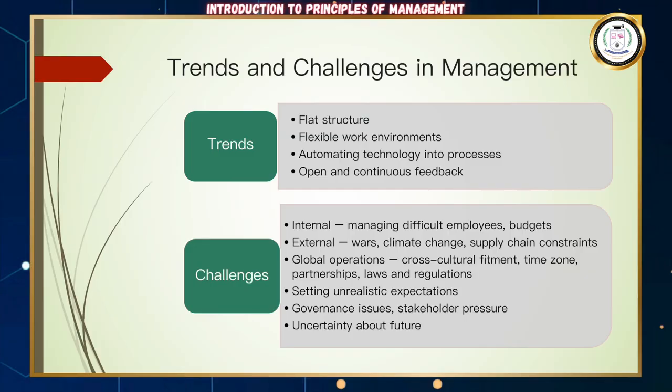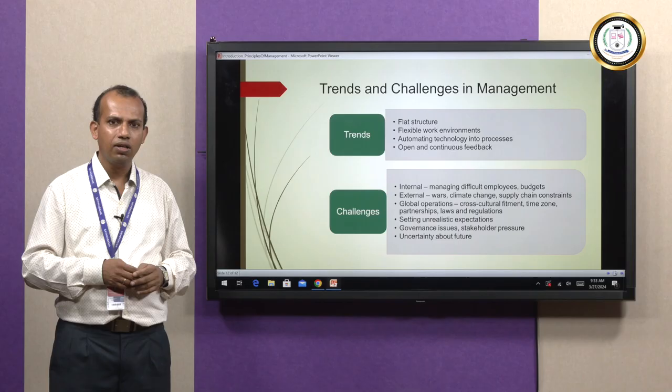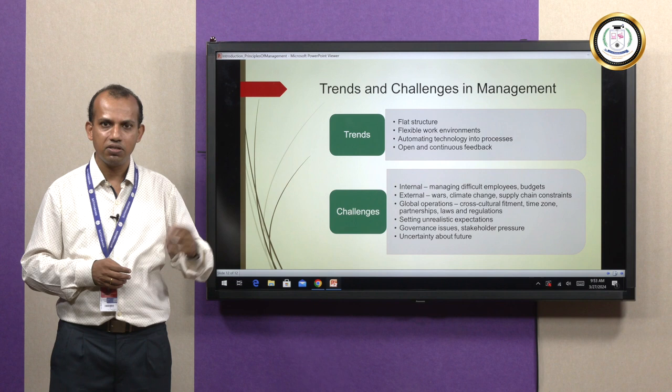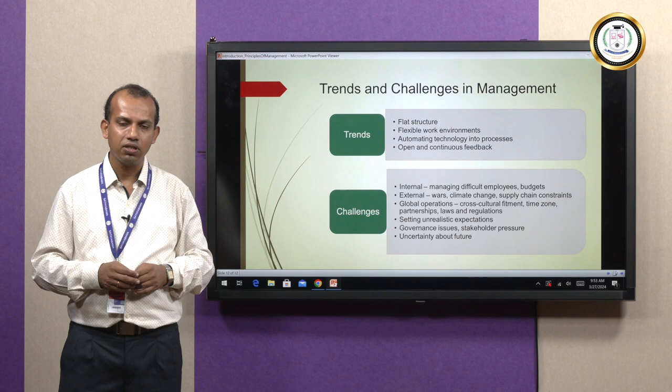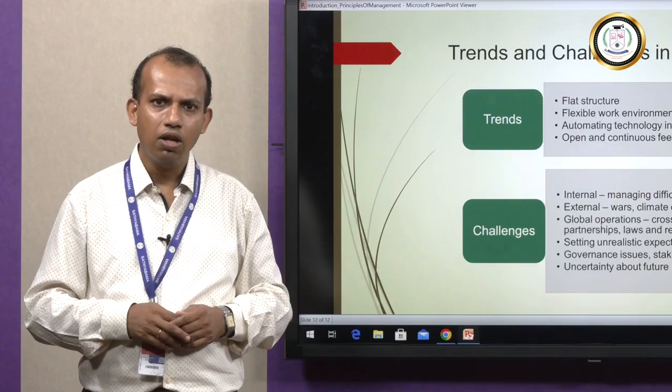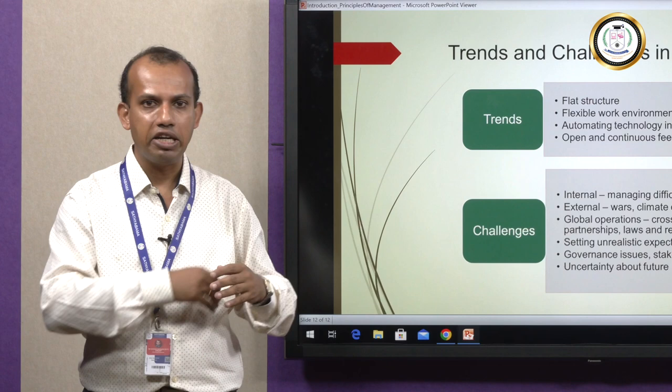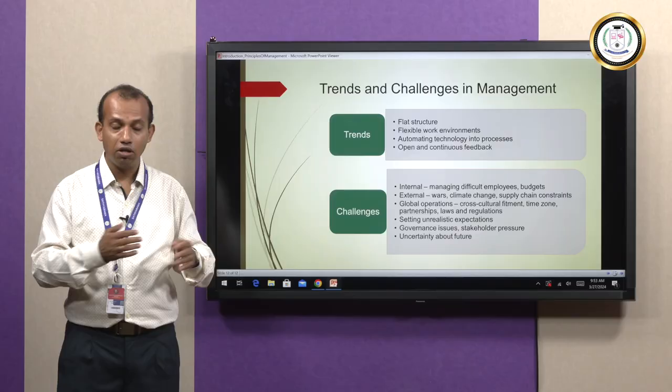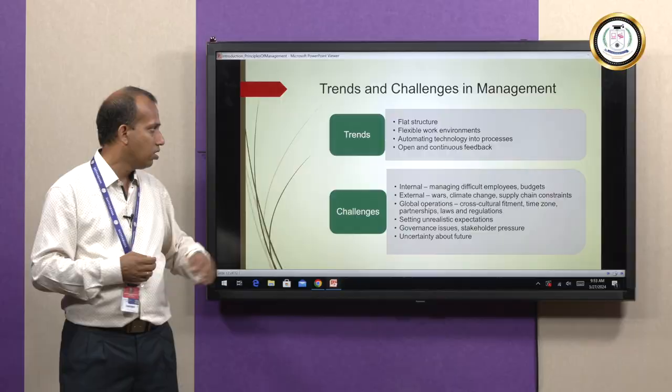General trends in management include flat structures — not just in startups, but also in traditional companies that are removing multiple layers of management levels, creating a lean structure so that employees are more encouraged and motivated to approach management.